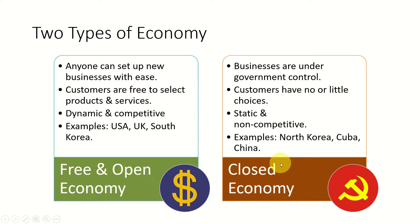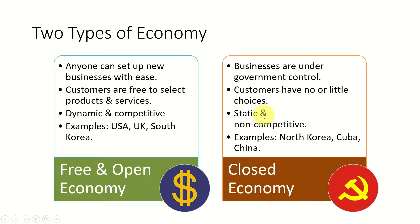Under a free and open economy, anyone can set up new businesses with few restrictions, whereas in a closed economy businesses are directly under government control. In a free market economy, customers have freedom to choose products and services, whereas in a closed economy customers rely on choices available from the government. Free and open economy promotes dynamism and competitiveness, whereas closed economy promotes a static and non-competitive nature. In short, free market economy promotes a good combination of competition and collaboration, whereas closed economy focuses on collaboration only.